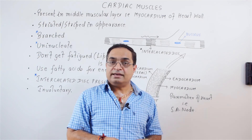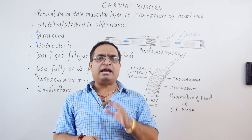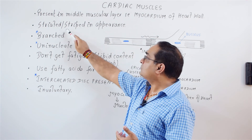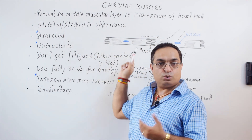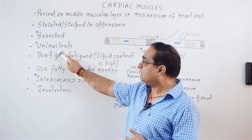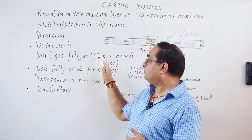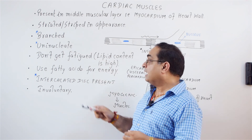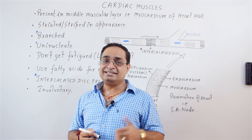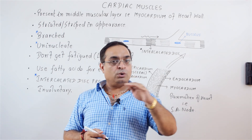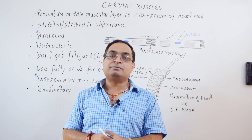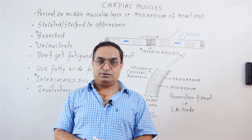Let's have a quick recap of what we have discussed. Cardiac muscle fibers are striated — they show alternate light and dark bands. These are branched and uninucleate. These do not get fatigued because their lipid content is high. A very important feature is the intercalated disc, which has gap junctions allowing quick spreading of the cardiac impulse. And one important point: cardiac muscle fibers are involuntary.